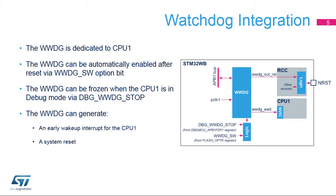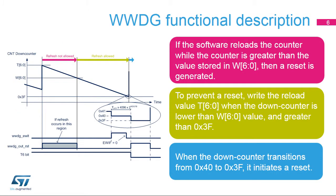The WWDG performs a system reset handled by the RCC block when a timeout occurs or when the WWDG is refreshed outside the allowed window. This diagram illustrates how the window watchdog operates. When the 7-bit down-counter rolls over from 0x40 to 0x3F, the watchdog asserts the reset. This happens if the application software does not refresh the window watchdog on time. The early wake-up interrupt, or EWI, if enabled, can be generated when the down-counter reaches 0x40.